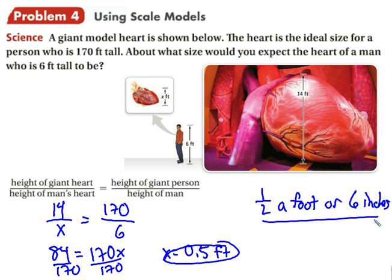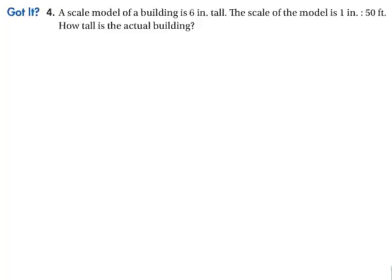That's how tall a 6-foot tall man's heart would be. We've used a model to figure that out. A scale model of a building is 6 inches tall, and the scale is 1 inch equals 50 feet. How tall is the actual building? We can use proportions: the scale of the building over the real height equals the scale of the model over its real height. So one side would say 1 over 50, and the other would be 6 over X.